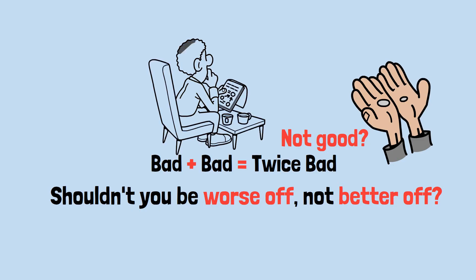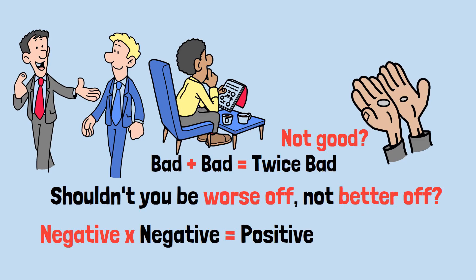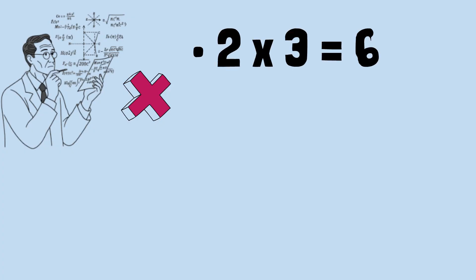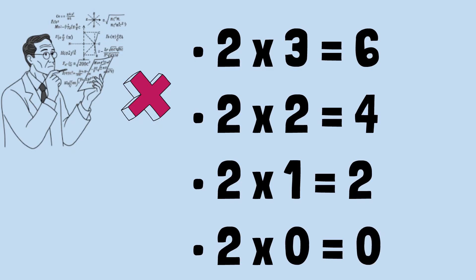This is exactly the kind of thinking that stumped those mathematical giants centuries ago. Let me walk you through the most elegant explanation for why negative times negative must equal positive. Imagine you're a mathematician thousands of years ago, and you're exploring what happens when you multiply numbers in sequence. You start with something comfortable and familiar. 2 × 3 = 6. 2 × 2 = 4. 2 × 1 = 2. 2 × 0 = 0.